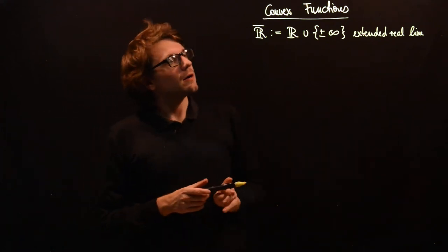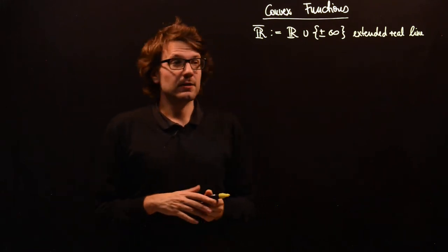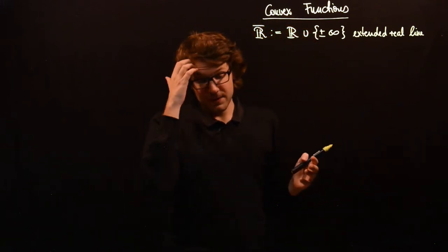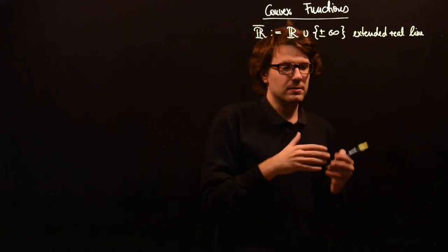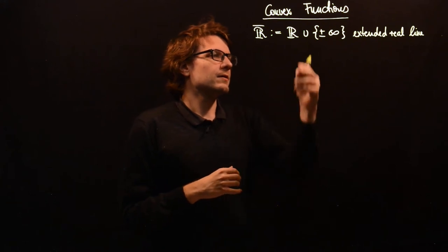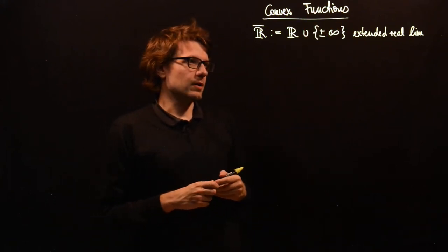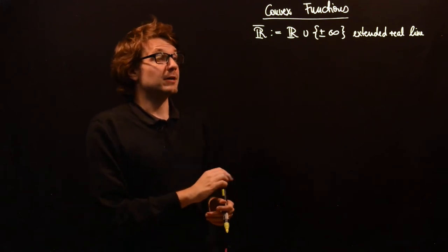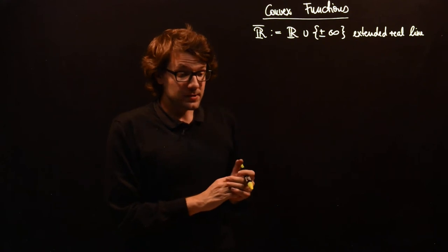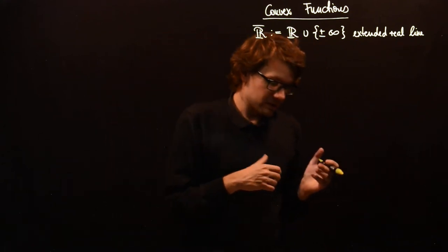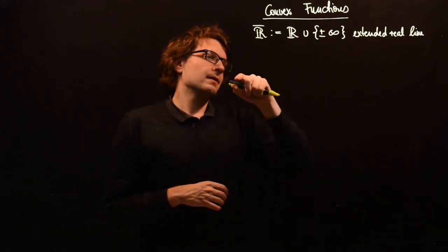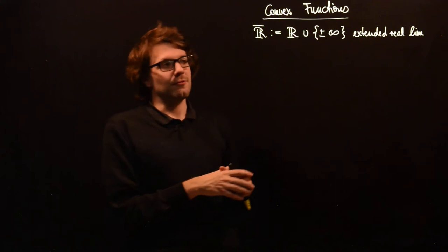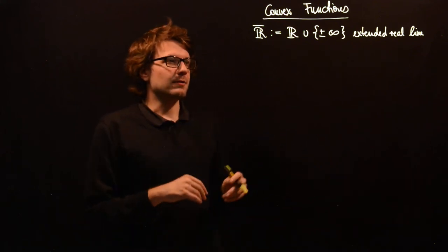Why are we doing this? If a function takes a value plus infinity and also has points where it takes real values, then the extended point with plus infinity will never be a minimum. So this is a very elegant way to also cover constraints or have constraint sets in our objective function. We will also see that for convex functions there is a very natural duality relation, and you will get functions which take the value plus infinity automatically with this duality. Therefore it's needed anyway, even if we didn't want to incorporate constraints.